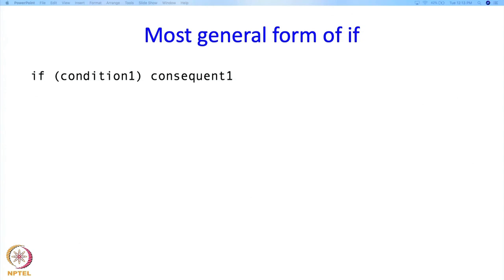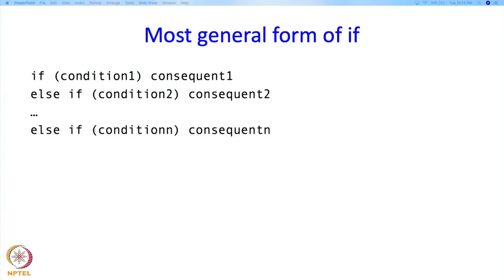We write condition 1, consequent 1, else if condition 2, consequent 2, and you can have several such else-if branches: condition 3, consequent 3; condition 4, consequent 4, and so on. The last condition will be if condition n, consequent n, followed by an optional else alternate.